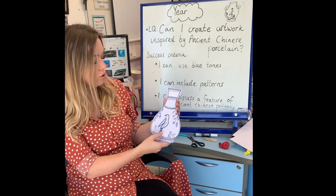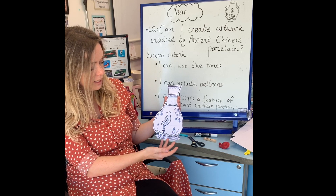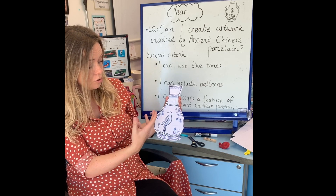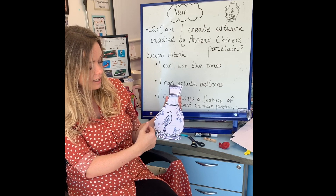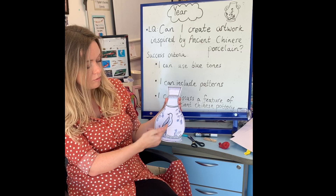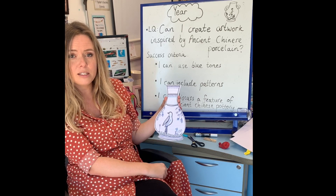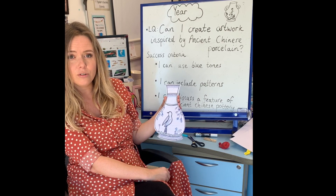Some of the features could be the blue tones in the patterns, or the patterns themselves, or some of the animals that they used — these could all be features you could refer to.